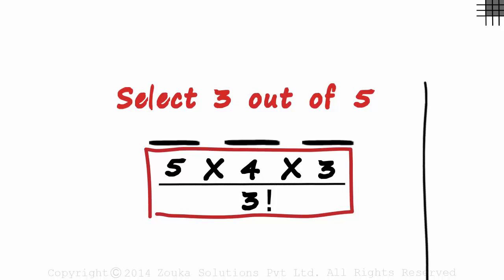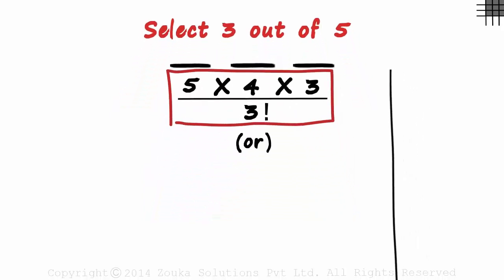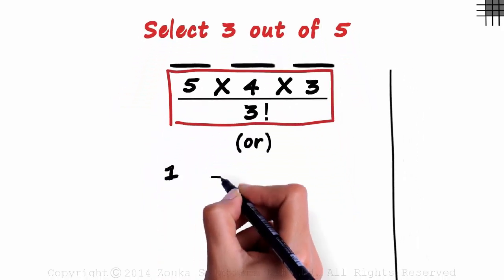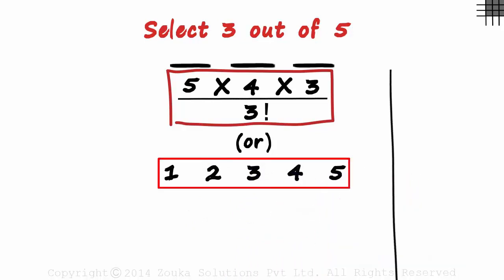There was another approach we had used to solve such problems. Let's say we number the five objects as 1, 2, 3, 4 and 5. From these five objects, we have to select three.